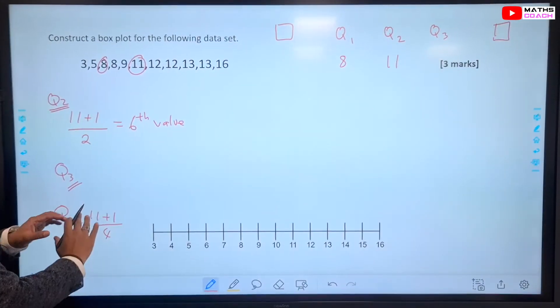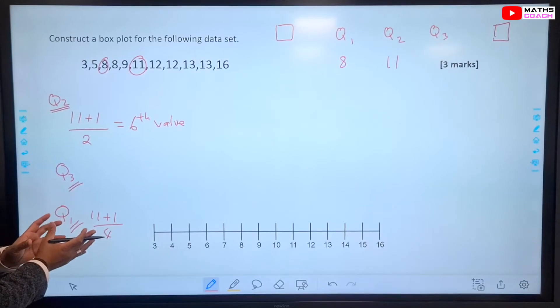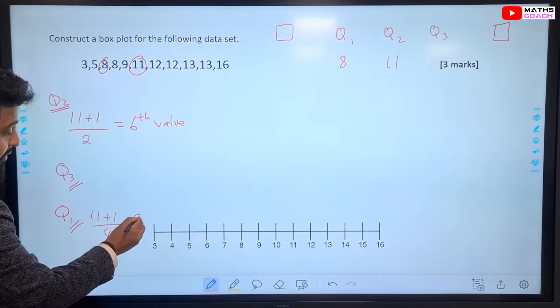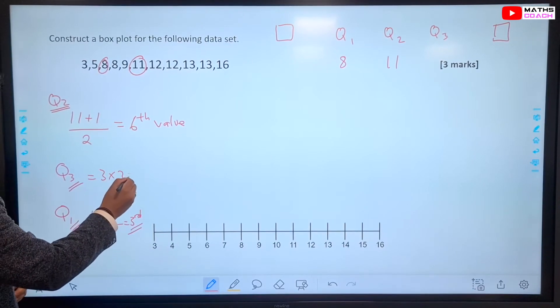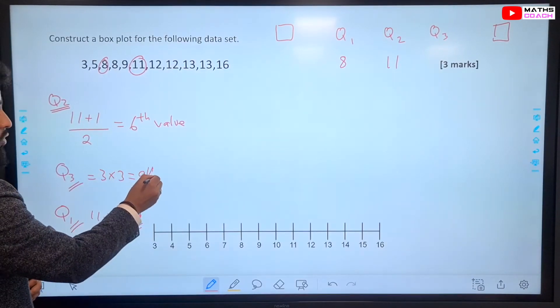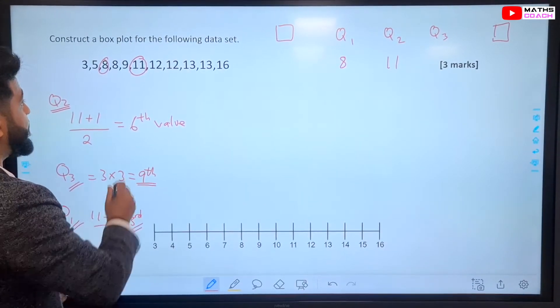And, like I said earlier, you can take the position of the lower quartile, which was the third value, and times it by 3. So, 3 times by 3 to find out where your upper quartile is, which is the 9th value.